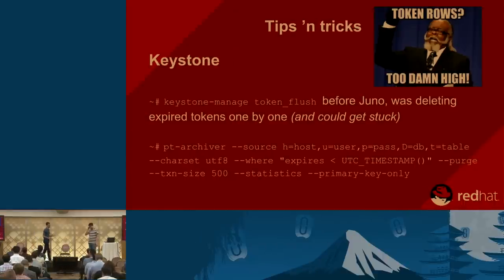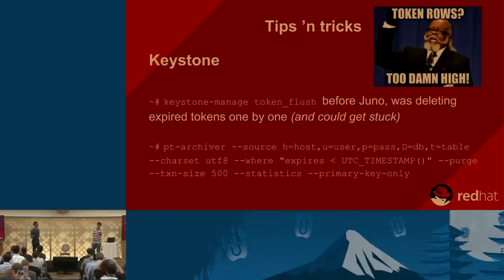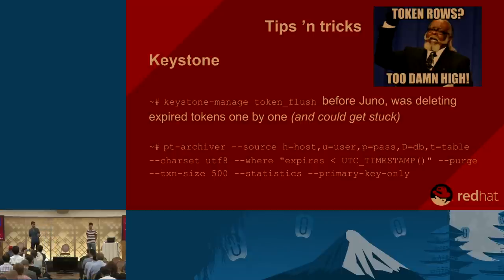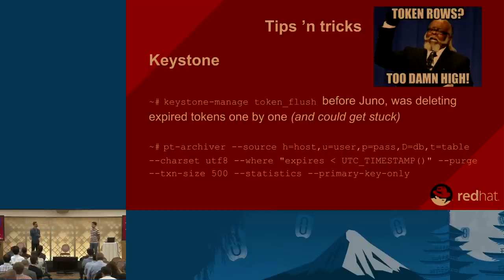A recurring Keystone issue, especially before Juno, is the token flush. Before Juno, the Keystone token flush command deleted tokens one by one — fine if you have a few, but if you have millions of expired tokens, it becomes very painful for both Keystone and the database. If you are running an older OpenStack version, use PT Archiver (Percona Toolkit) to delete tokens in bulk batches of, for example, 500. It's much quicker and safer.